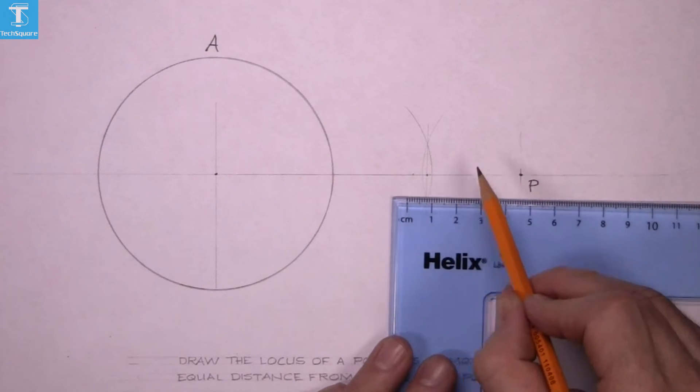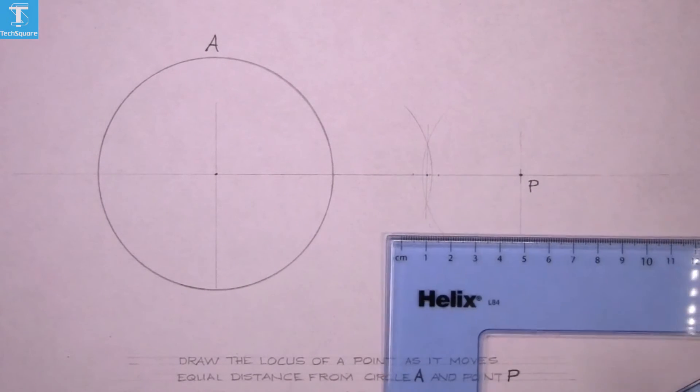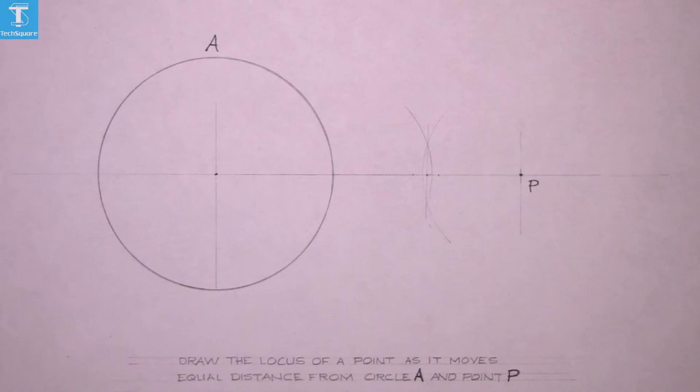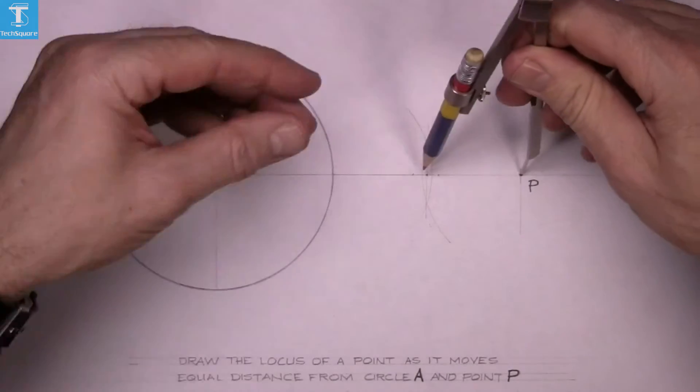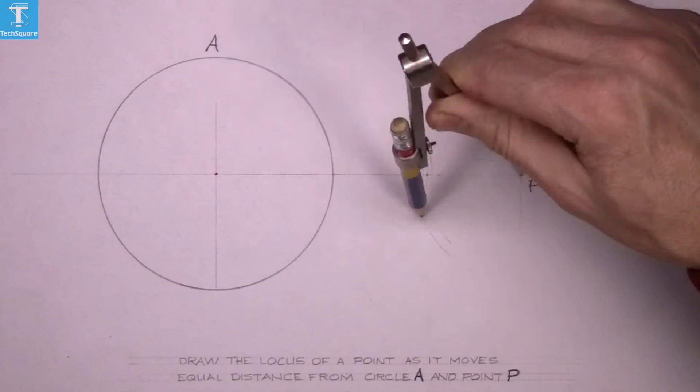Now do the same the other way around from the circle. So measure five from midpoint away from the circle further, and then from point P mark an arc using that first measurement you marked.